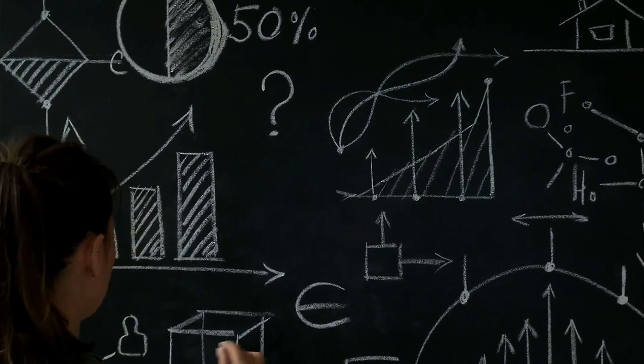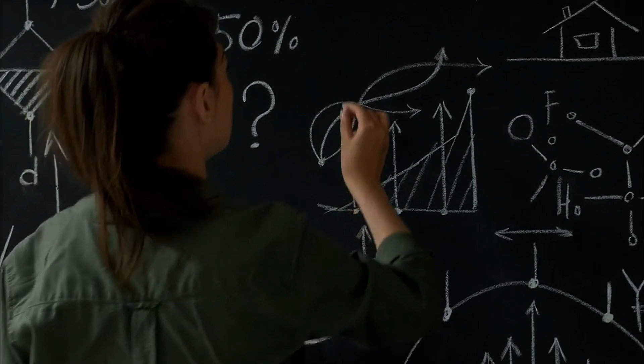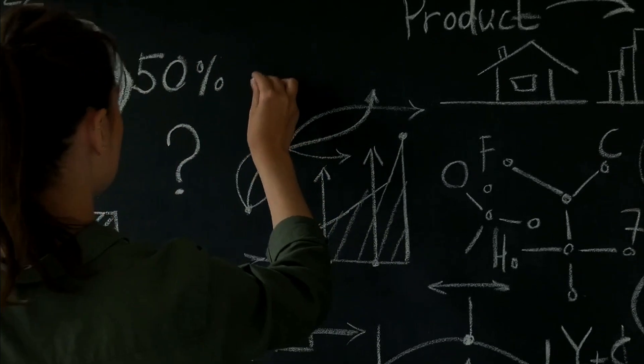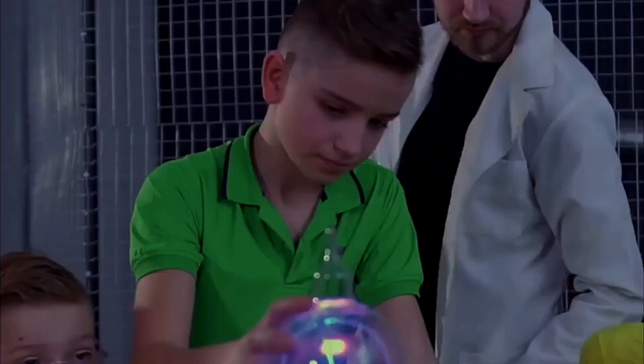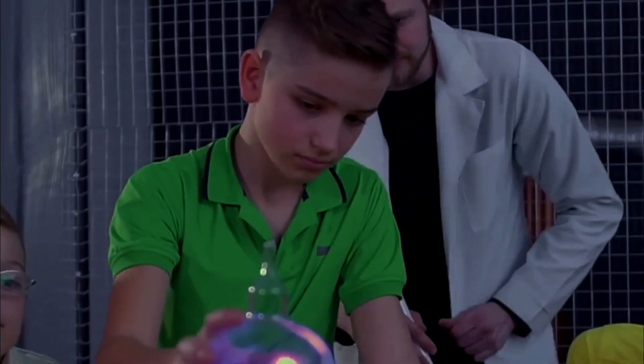Observational astronomy also advanced during this period. Edmund Halley predicted the periodicity of Halley's comet. William Herschel discovered Uranus, and Henry Cavendish measured the gravitational constant. These advancements showcased the power of Newtonian mechanics.